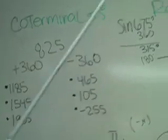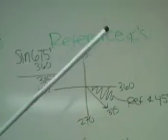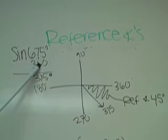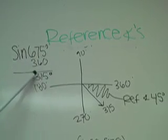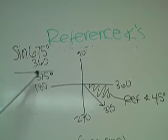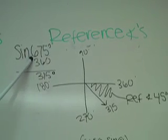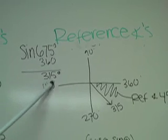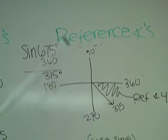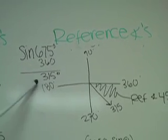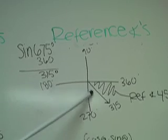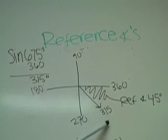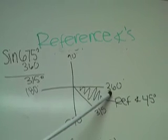Another topic is the reference angles. You are given a certain coterminal angle, but the coterminal angle always has to be between 0 and 360. So if it's more than 360, you subtract 360 — that would be the coterminal angle. And when you have a coterminal angle, you graph it, and then since it's in this quadrant, you subtract it from 360.